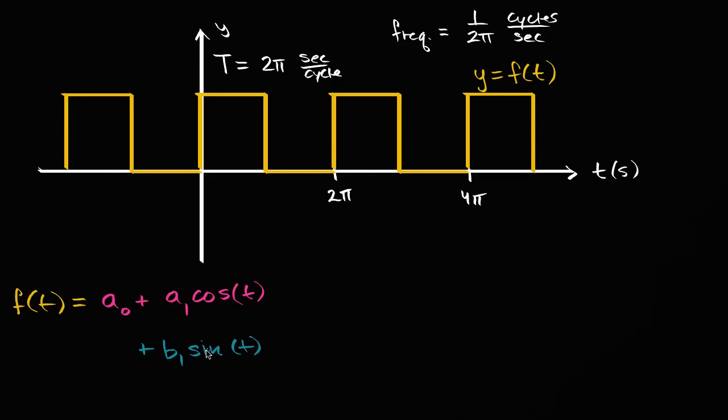Why am I starting with cosine of t and sine of t? Well, if our original function has a period of two pi, and I just set up this one so it does have a period of two pi, it would make sense that it would involve some functions that have periods of two pi. And these weights will tell us how much they involve it.